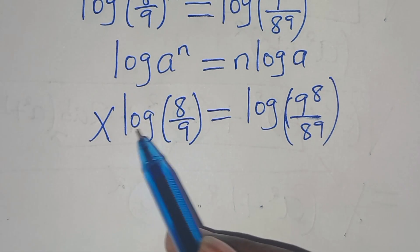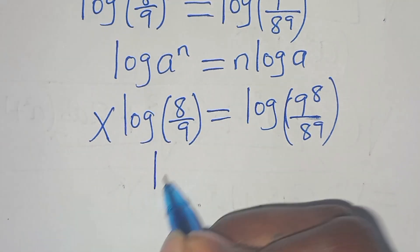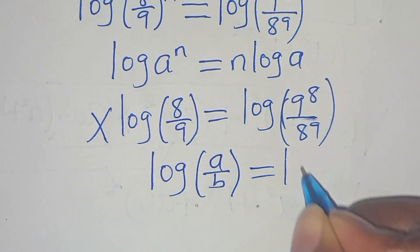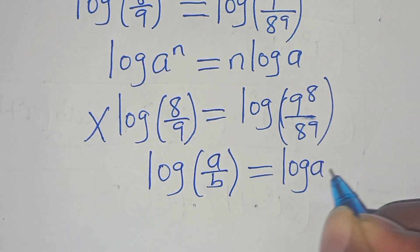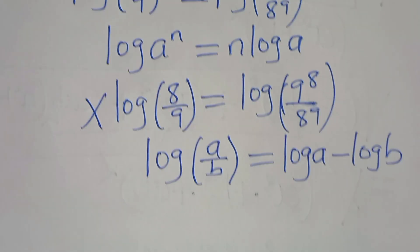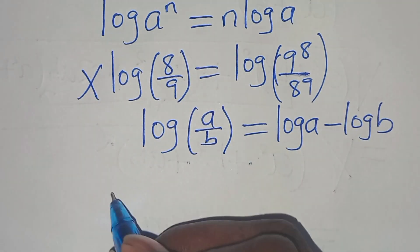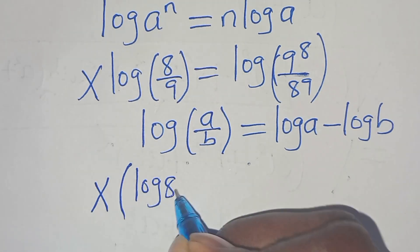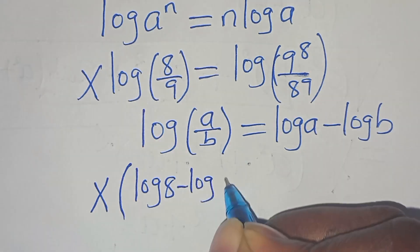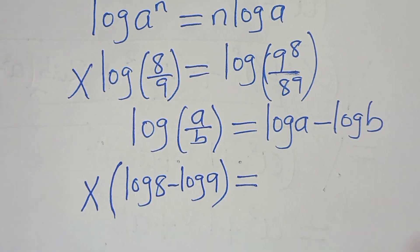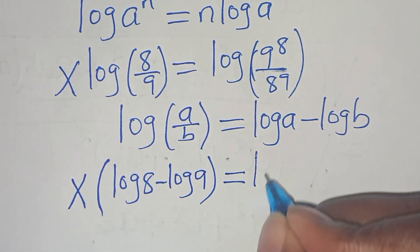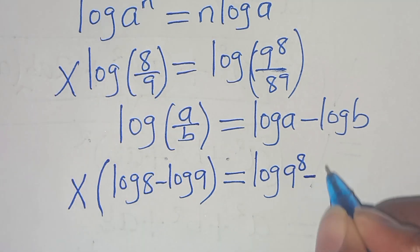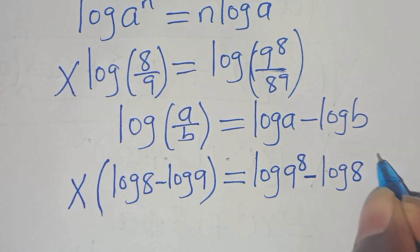Now log(8 over 9) is in the form of log(a over b), which we can express as log a minus log b. Applying this logarithm property, we have x times (log 8 minus log 9), equal to log(9 to the power of 8) minus log(8 to the power of 9).